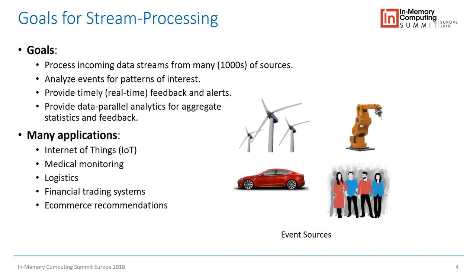The goals of stream processing are to handle many events from many data sources, correlate and analyze them, generate feedback, and understand what they tell us about the physical systems generating those events. Applications include IoT like windmill farms, human-based sources like e-commerce shoppers or runners wearing watches, plus fraud detection, financial services, stock trading, medical telemetry — trying to predictively prevent bad outcomes and optimize desired behaviors.